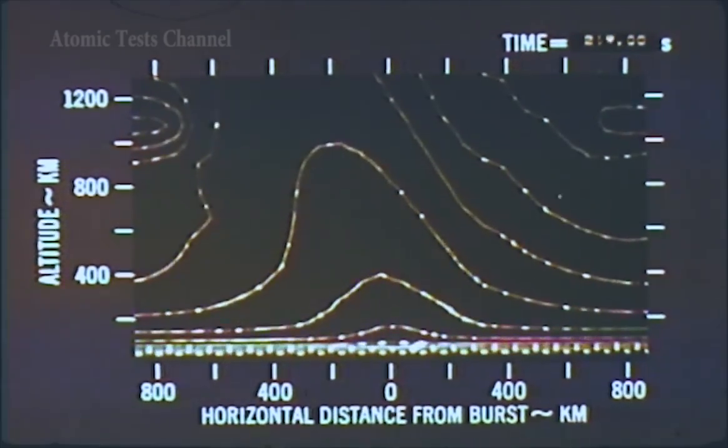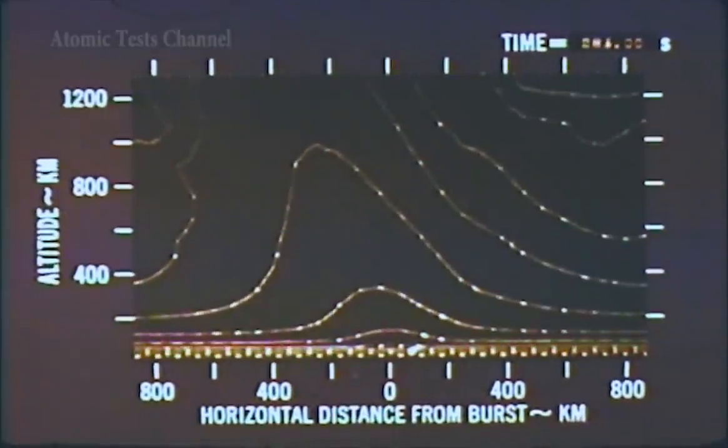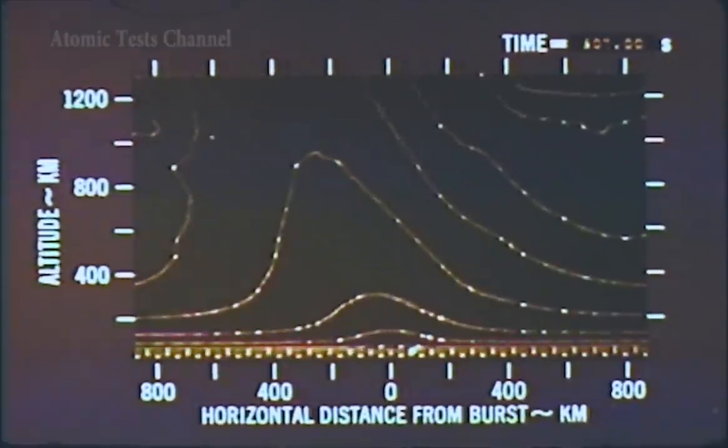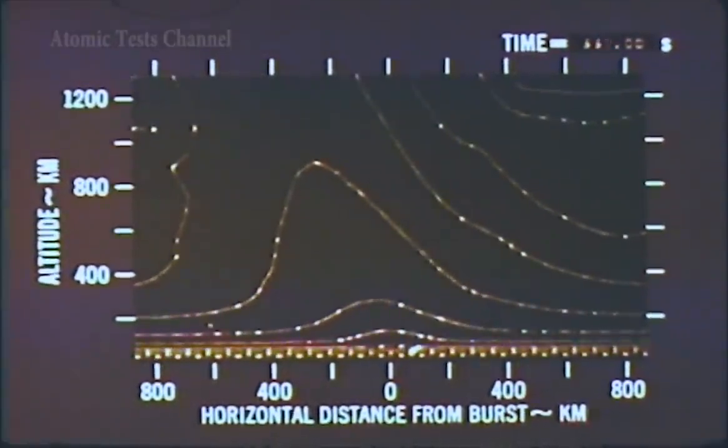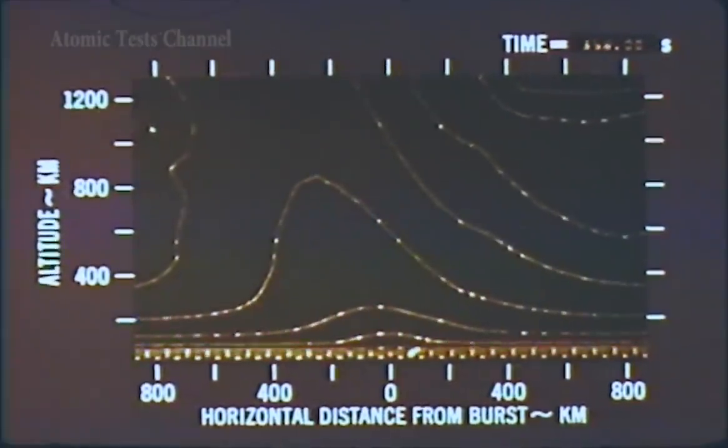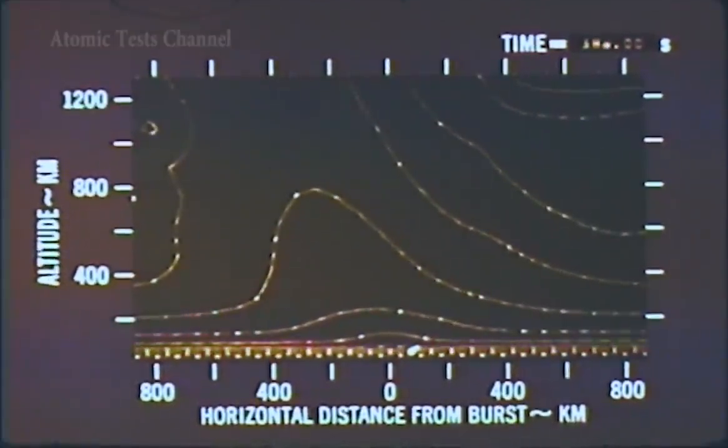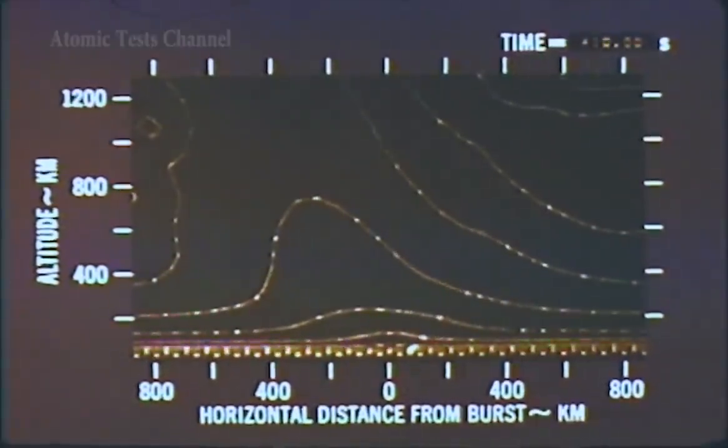The high-altitude explosion has deposited X-ray and ultraviolet energy in the upper atmosphere. Also, high-velocity debris was guided down the field lines from the burst point. This kinetic and thermal energy heats the atmosphere in the vicinity of 100 kilometers, causing it to heave upward to achieve pressure equilibrium. This upward heave significantly changes the mass density and chemistry at high altitudes.